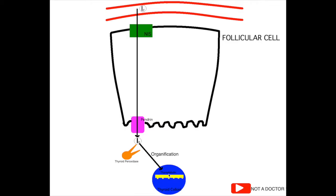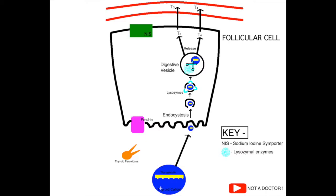Organification of the iodine on tyrosine residues of thyroglobulin results in formation of T3 and T4, which are stored attached to the thyroglobulin molecule in the form of thyroid colloid. Thyroid hormone is released by the process of endocytosis, where a vesicle is formed, lysosomes get attached, and release endopeptidases forming a digestive vesicle. These endopeptidases cut the thyroglobulin molecule and cause release of T3 and T4 into blood circulation.